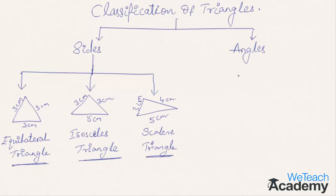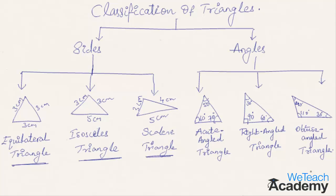Based on angles, triangles are again of three types: acute angle triangle, right angled triangle, and obtuse angle triangle.